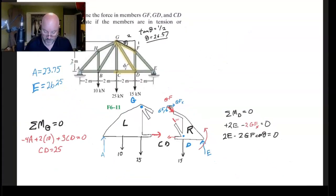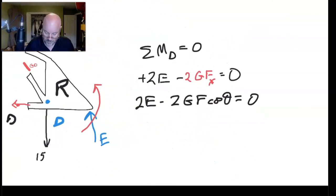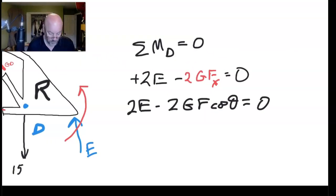So there's theta. Now let's go back down to our moment equation at D. And I want to put that number 26.57 in for right here. Then just do my algebra. And once I do that, I'm going to get that GF is equal to 29.35.